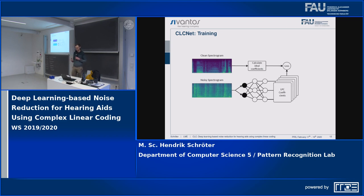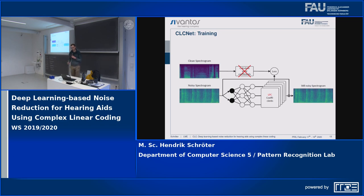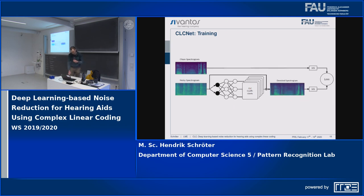We can train the network using the ideal coefficients computed at training time given the clean spectrum. However, the result is still not optimal and only slightly reduces noise, because the ideal LPC coefficients are only valid for parts where we have voiced speech. For parts where we have unvoiced speech or no speech at all, those coefficients are not very meaningful — they're not zero, they can be anything — and those coefficients are not helpful for denoising the signal.